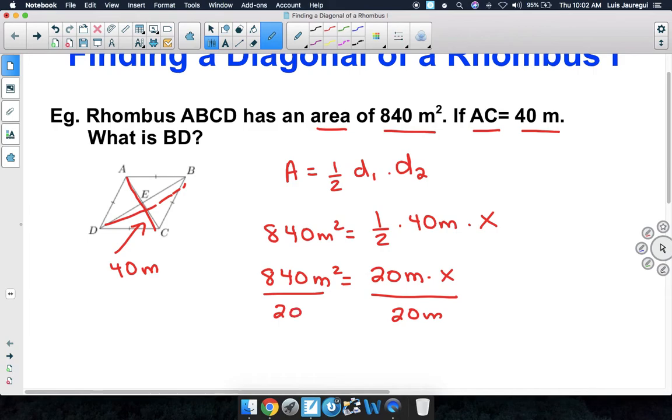By doing so, we're going to get that 84 divided by 2 happens to be 42. Meter squared divided by meter is simply meters. 20 meters divided by 20 meters is 1, and 1 times X is equal to X.